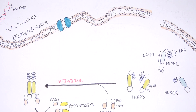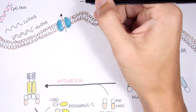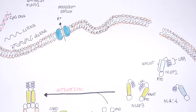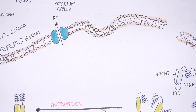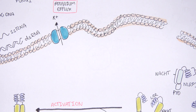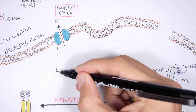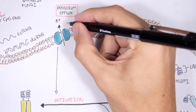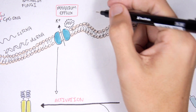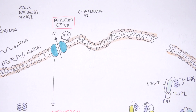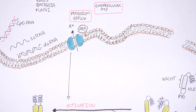An efflux of potassium can activate NLRP3 inflammasome formation. Potassium efflux can be induced by bacterial toxins as well as by extracellular ATP, which engages with the potassium channel causing potassium to exit the cell.